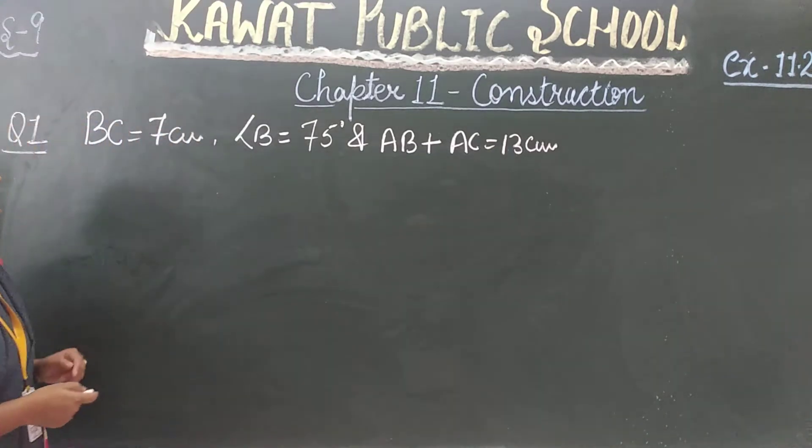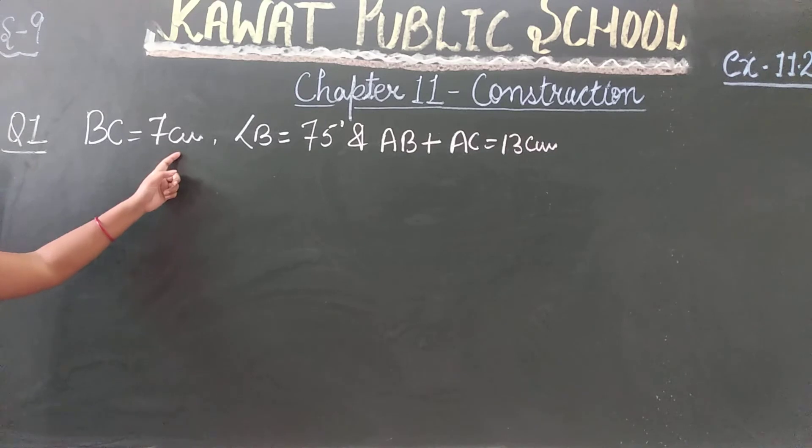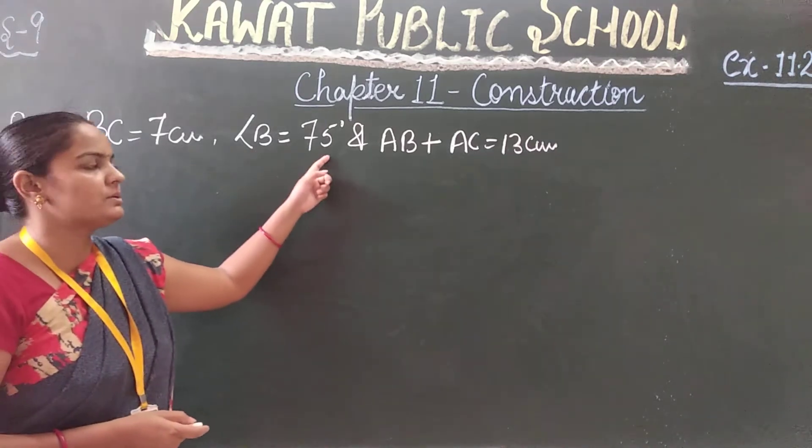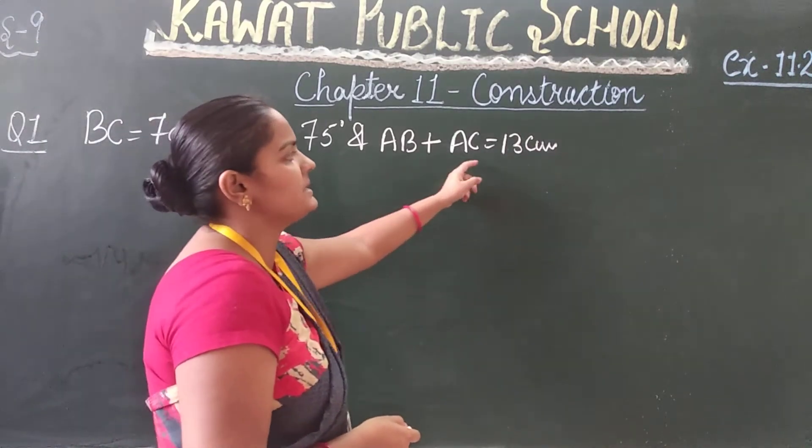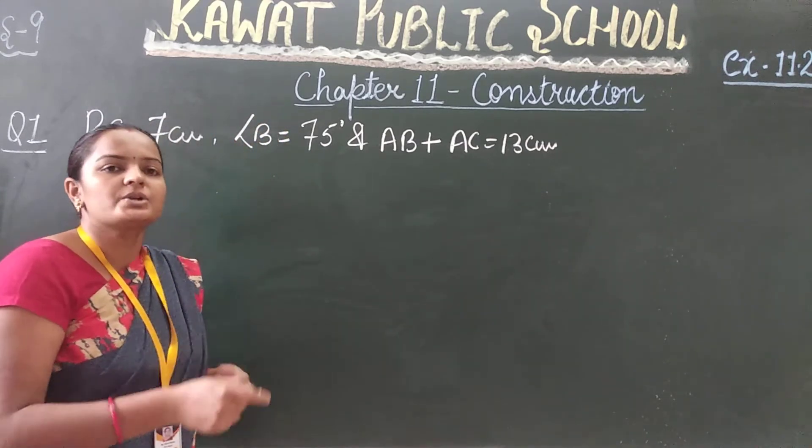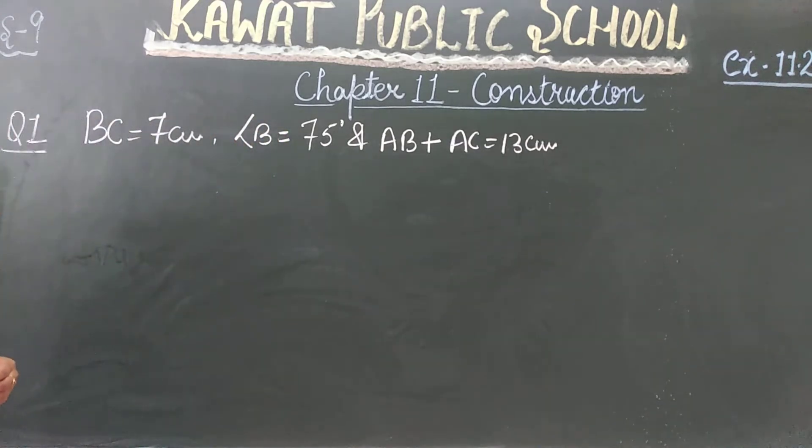Let's start with question number first. BC is equal to 7 cm, angle B is equal to 75°, and AB plus AC is equal to 13 cm. Construct the triangle.